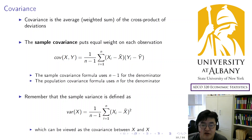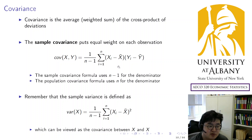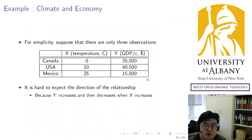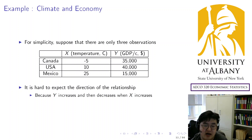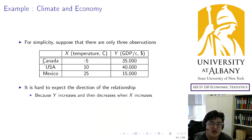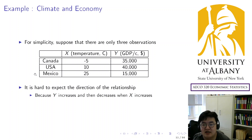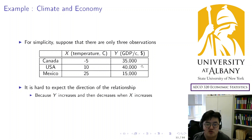We learned the definition of the covariance and how to calculate it. It's pretty much similar to the variance, but a little more complicated because it involves two random variables. Let's simply consider our data with only three observations — restrict our data to North America: Canada, US, and Mexico. I also simplified the numbers, so the actual numbers are different.